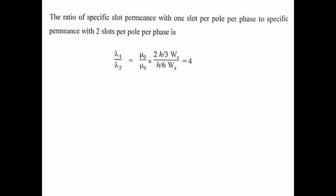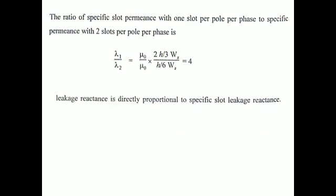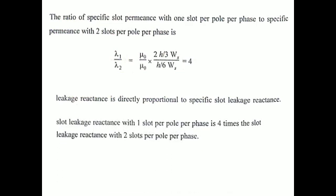We calculate the ratio λ₂ / λ₁ — note: λ₂ is one slot per pole per phase and λ₁ is two slots per pole per phase. After substituting and simplifying, all terms cancel and the final value becomes 4. So λ₂ / λ₁ = 4. The conclusion is: slot leakage reactance with one slot per pole per phase is four times that with two slots per pole per phase, since leakage reactance is directly proportional to specific slot permeance.